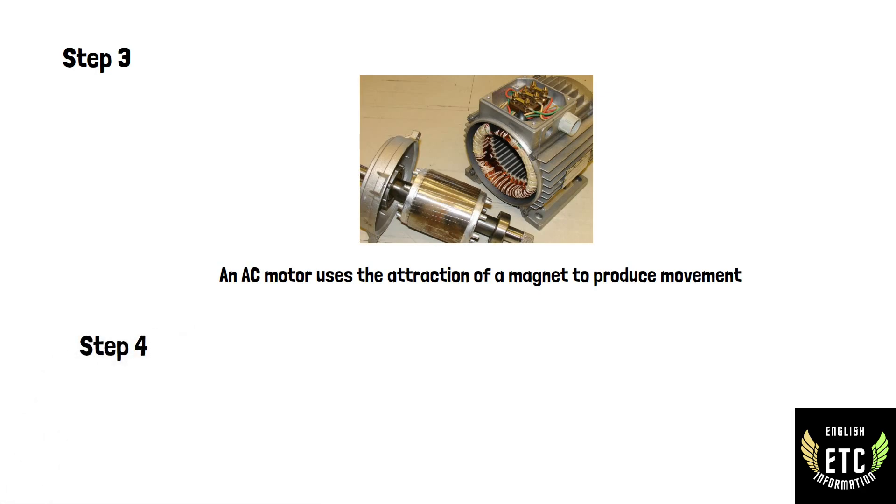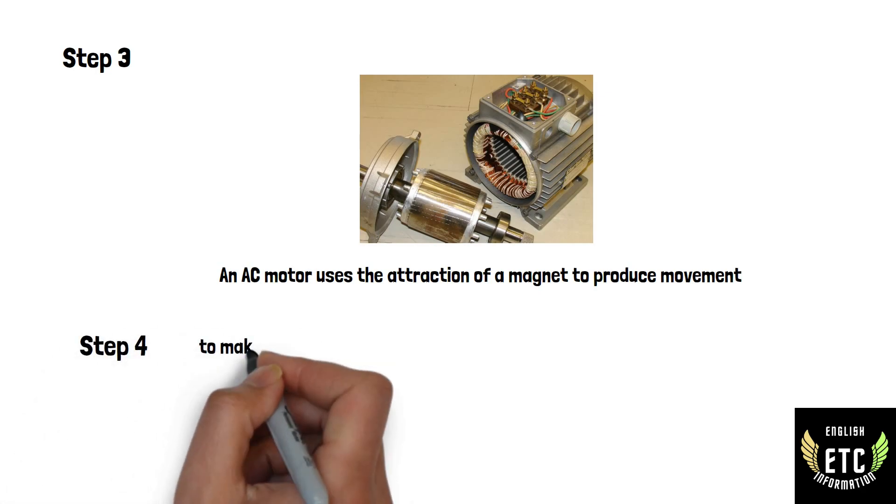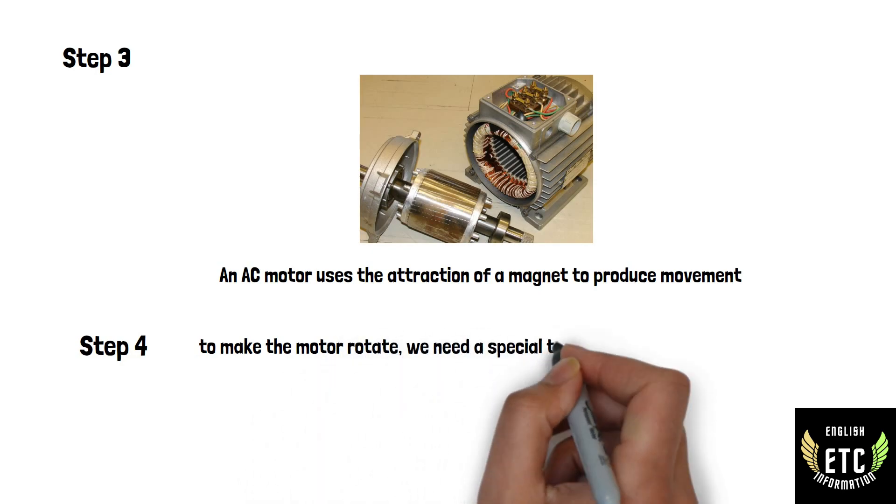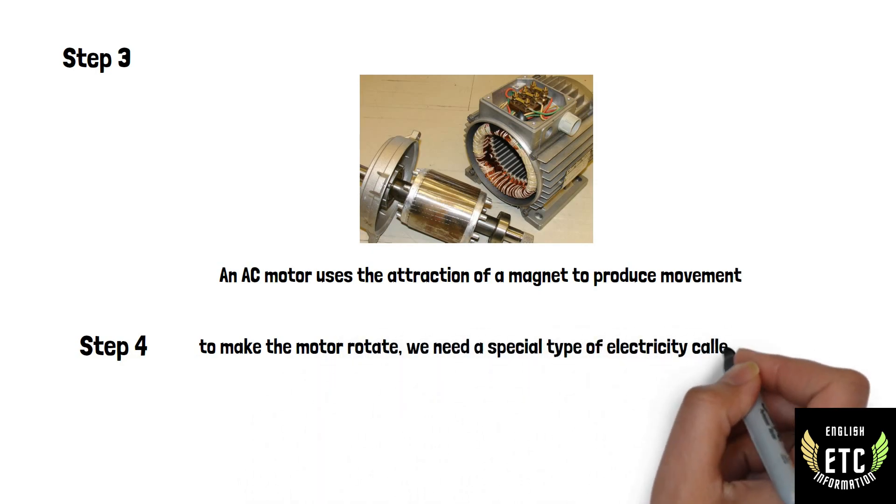Now in step four, to make the motor rotate, we need a special type of electricity. We call it AC, that is alternating current.